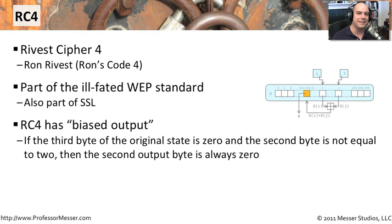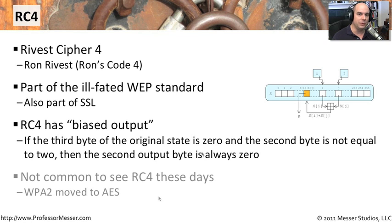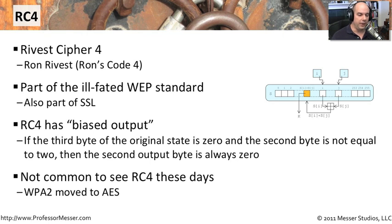RC4 has what we call a biased output. If the third byte of the original state is zero, and the second byte is not equal to two, then the second output byte is always zero. By having these types of discoveries in the cipher itself, we were able to find that perhaps it was not as secure as we would like. Although it was useful for a short time over our wireless networks, once we started discovering these little problems, we quickly realized this was not the symmetric cipher we wanted to use. So you don't really see RC4 around much anymore.